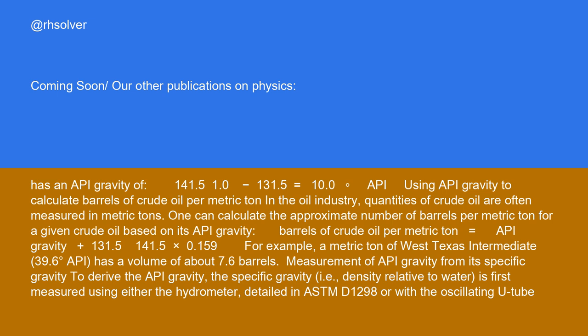Using API gravity to calculate barrels of crude oil per metric ton. In the oil industry, quantities of crude oil are often measured in metric tons. One can calculate the approximate number of barrels per metric ton for a given crude oil based on its API gravity.